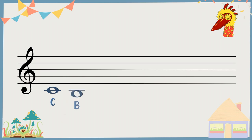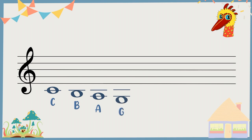Draw another ledger line, you'll have A. Right below that line is your ledger space again. And that's G. Your music alphabets move backwards below the stave.